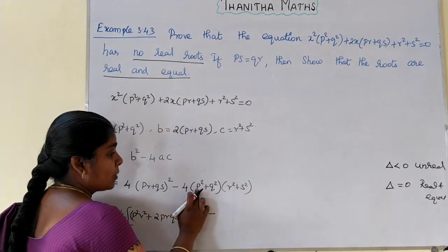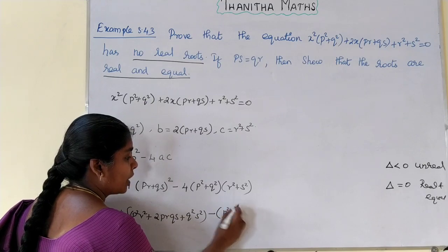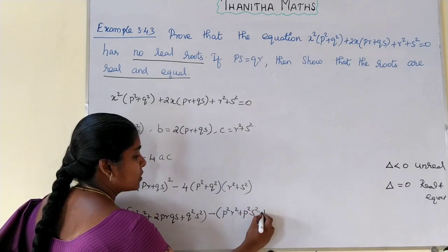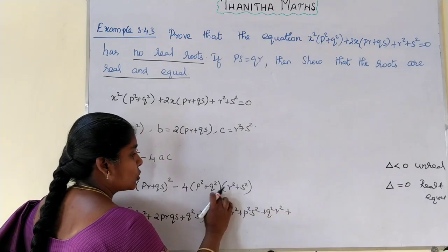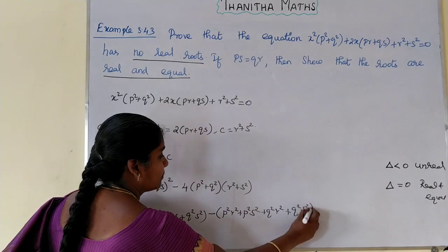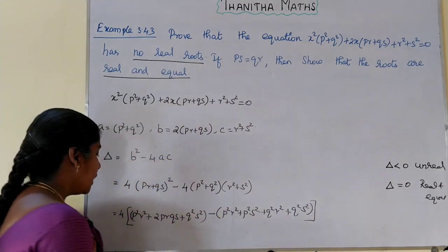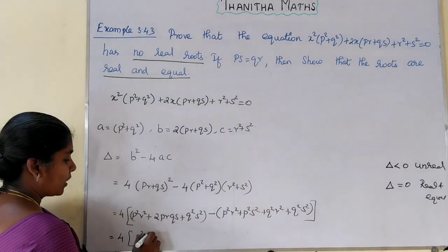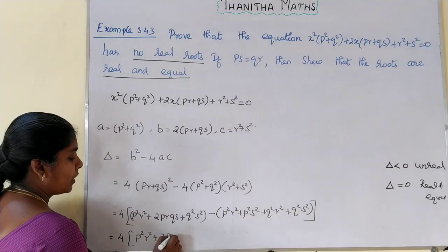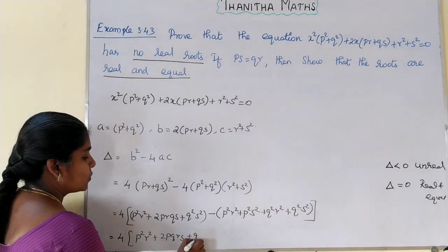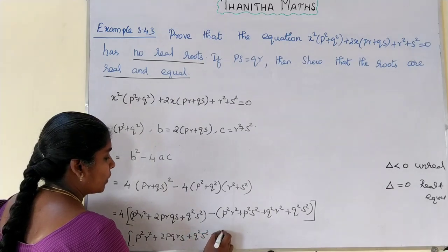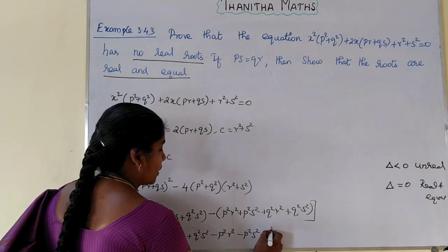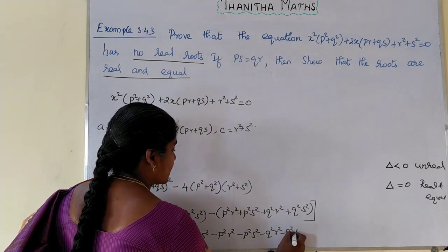Now we expand. We get: 4(p²r² + 2pqrs + q²s²) minus 4(p²r² + p²s² + q²r² + q²s²). Expanding: 4p²r² + 8pqrs + 4q²s² minus 4p²r² minus 4p²s² minus 4q²r² minus 4q²s².